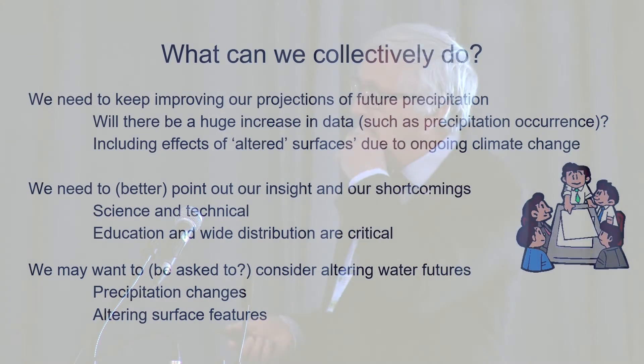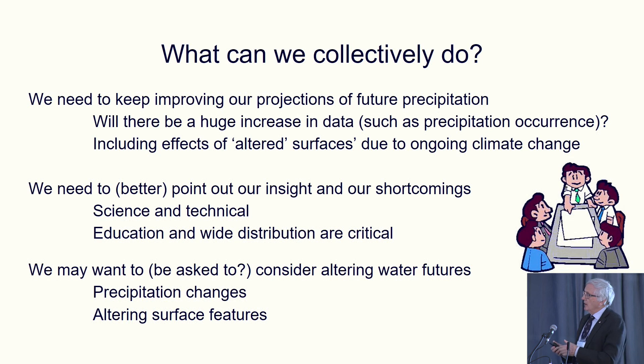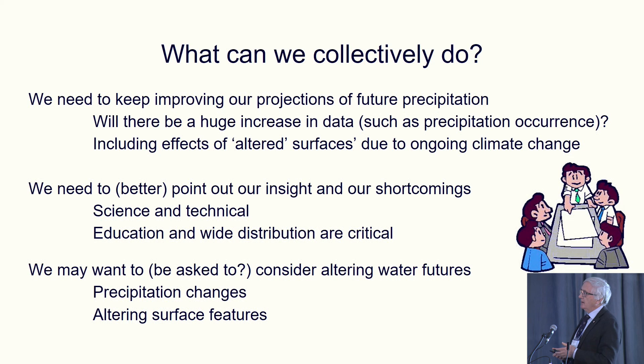So what can we collectively do, looking several decades down the road? With all the smartphones and everything, there's going to be a huge increase in data. Even just knowing the occurrence of precipitation, there may be a huge increase in the amount of information characterizing at least some aspects of precipitation. As our surfaces are being altered through climate change, what is going to be the consequence of that? And as numerous other people have pointed out, we need to better communicate our insights and our shortcomings. I really enjoy chatting with the general public about how well we're doing and what shortcomings we have — they really appreciate when we go through the caveats we as scientists actually know about.